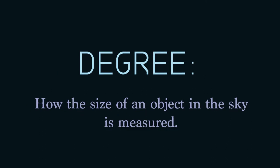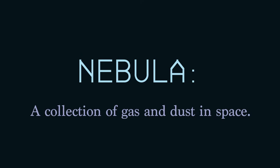The size of an object in the sky is measured in degrees. There are 360 degrees in a circle. The Sun and the Moon both occupy one half a degree of the sky. The term nebula, or the plural nebulae, will be used frequently. A nebula is a collection of gas and dust in space.